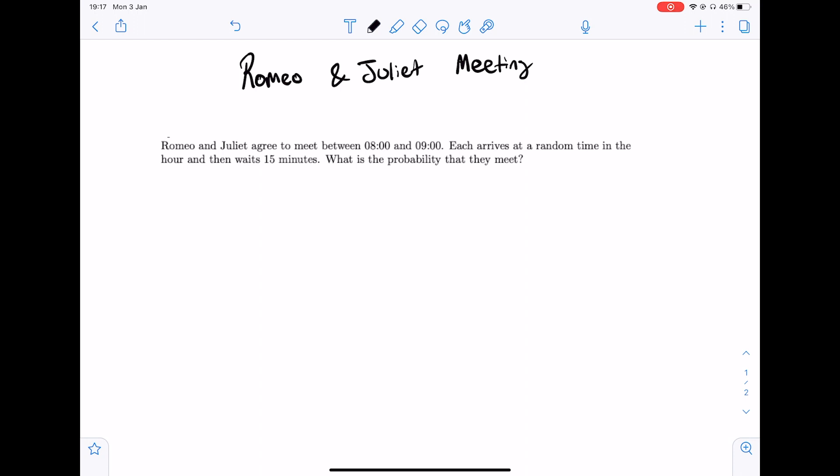In this video I'm going to go through a question that's popular in the JP Morgan interview question for the quant roles. It's called the Romeo and Juliet meeting. It's quite a popular question in terms of probability and it goes like so.